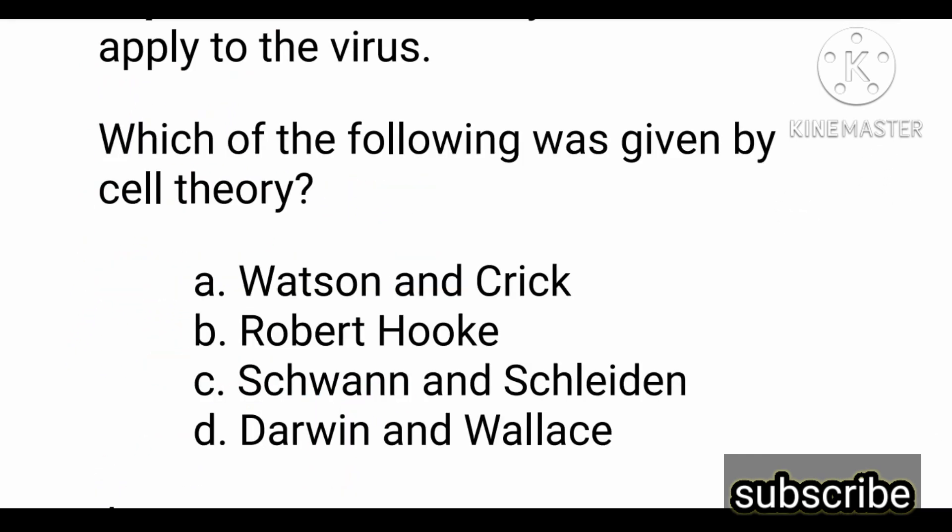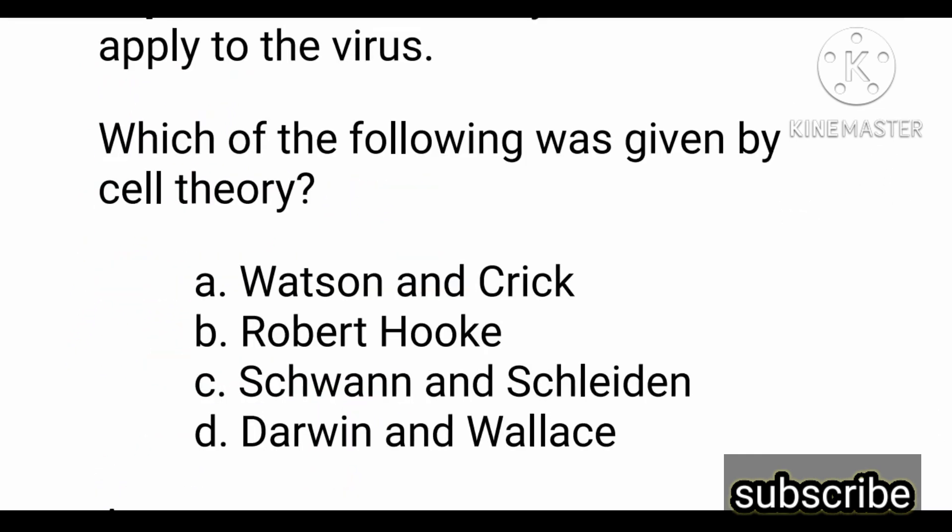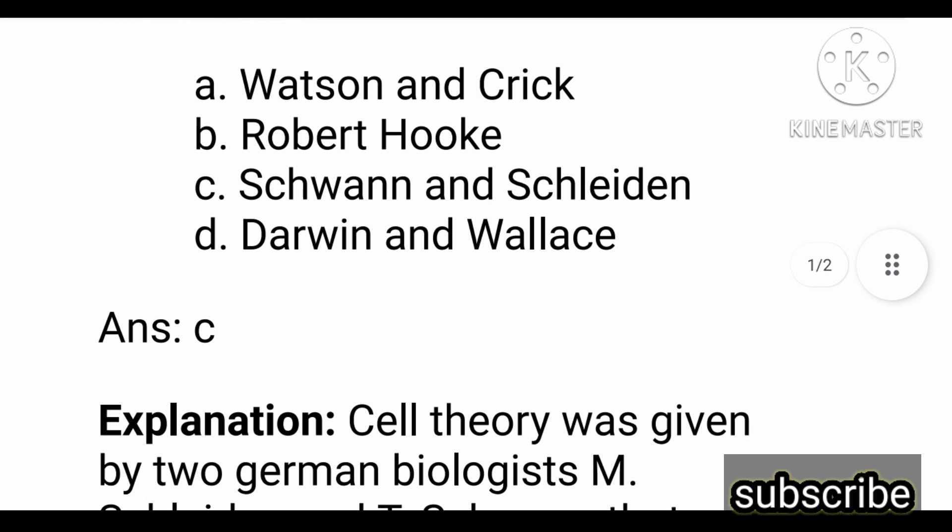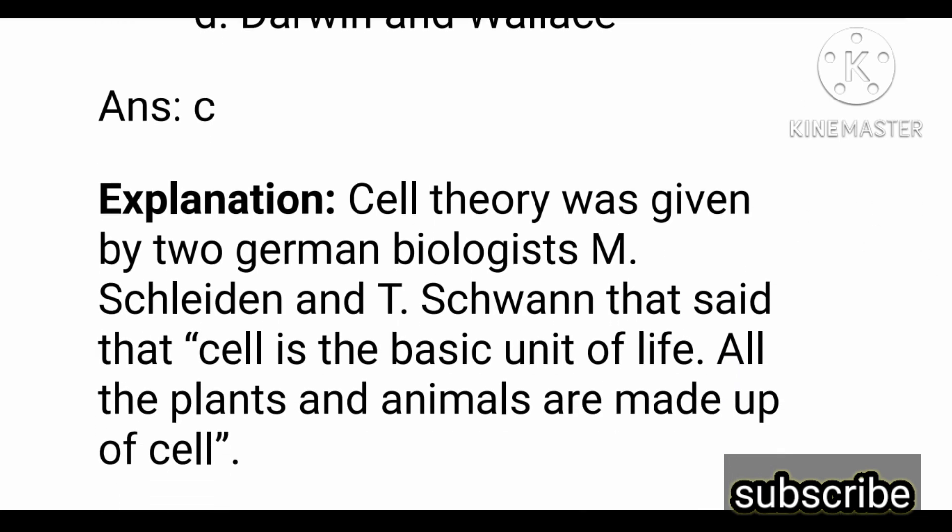Next question: which of the following scientists gave the cell theory? Options are: Watson and Crick, Robert Hooke, Schwann and Schleiden, and Darwin. The correct answer is option C, Schwann and Schleiden. Cell theory was given by two German biologists, M. Schleiden and T. Schwann, who said the cell is the basic unit of life and all plants and animals are made up of cells.